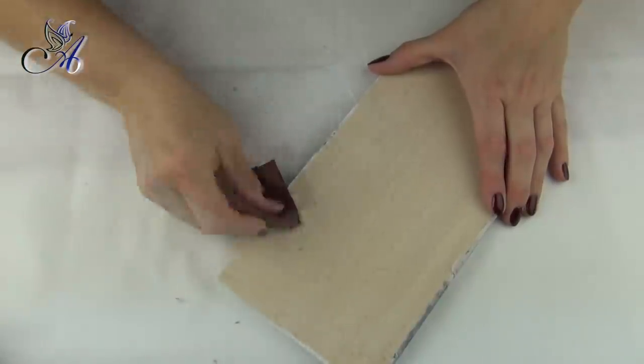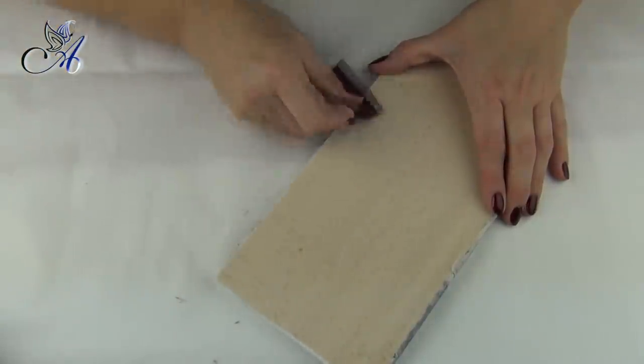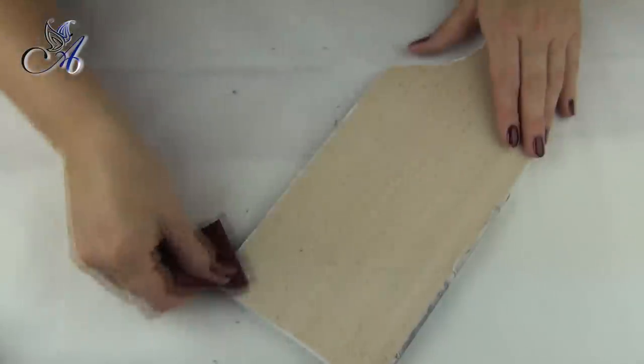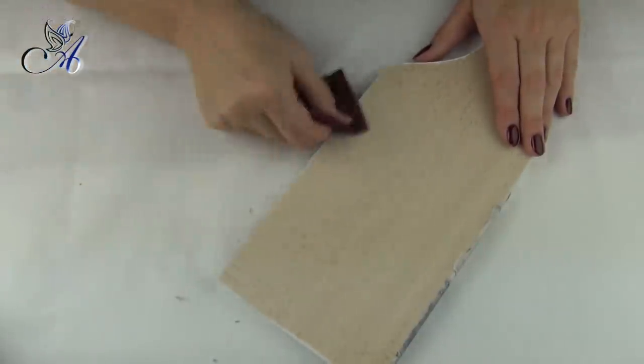Now I can use sandpaper to remove overhanging edges. Then I paint back of my board with white primer using sponge.